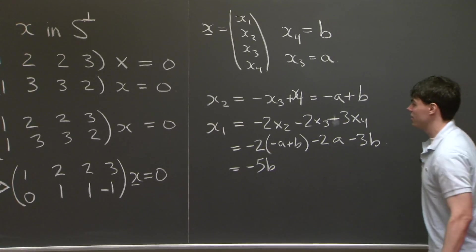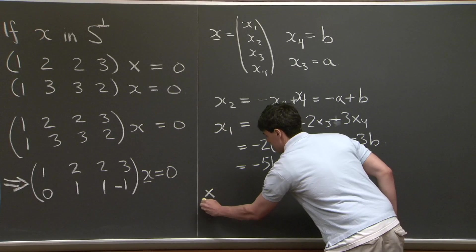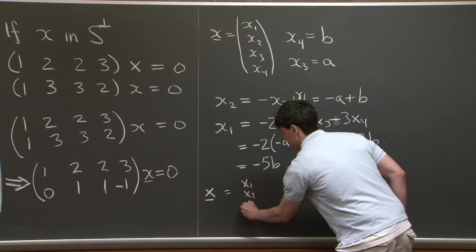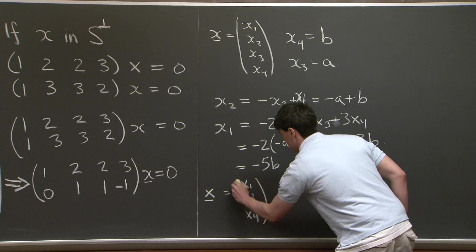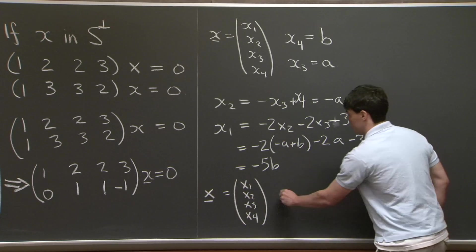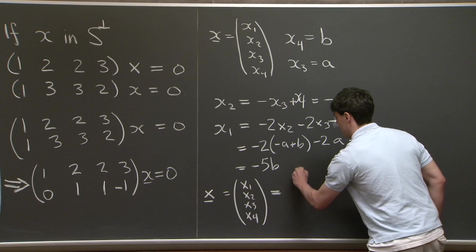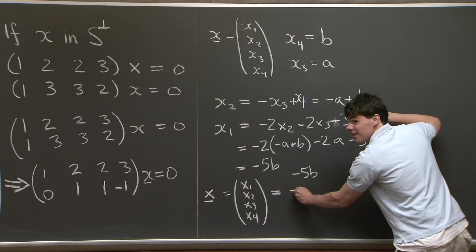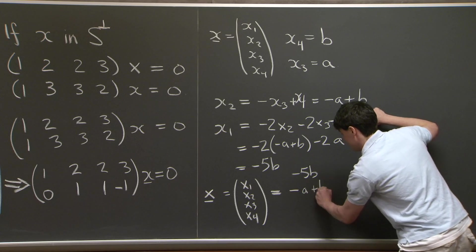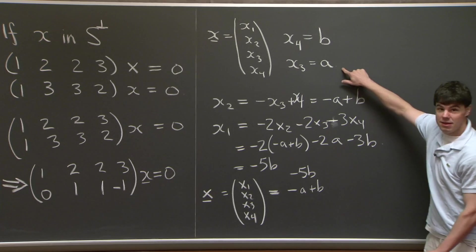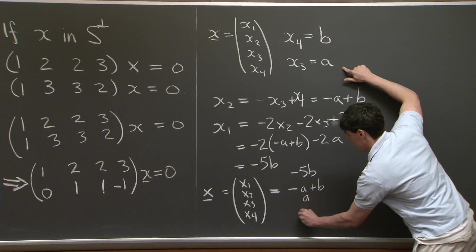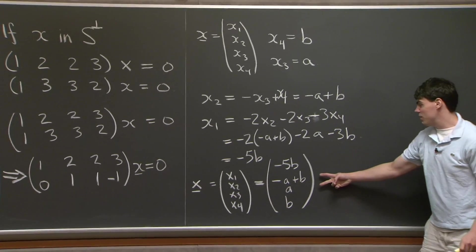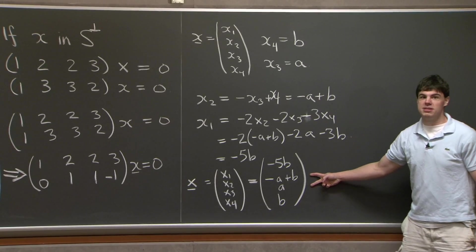OK, so we can combine everything together, and we end up obtaining (x1, x2, x3, x4) equals (-5b, -a + b, a, b).